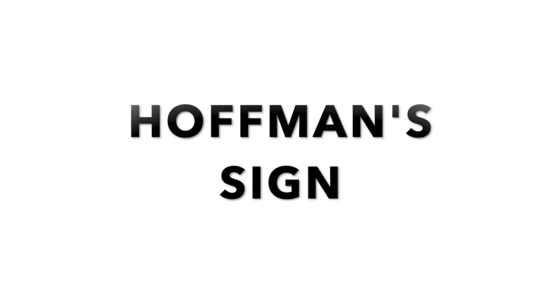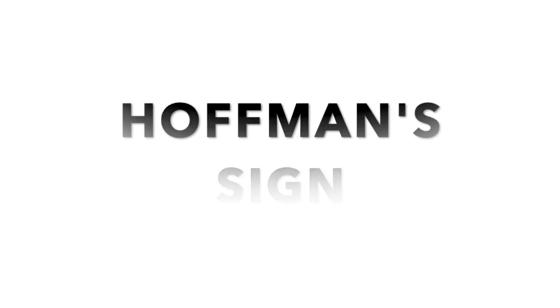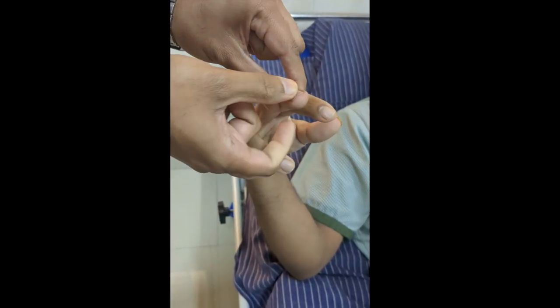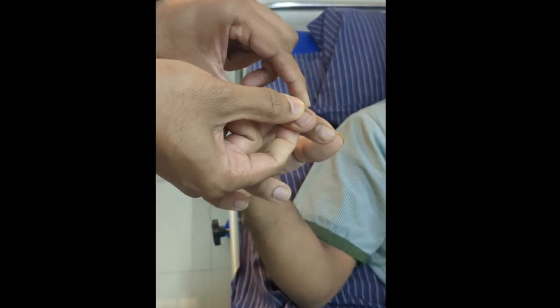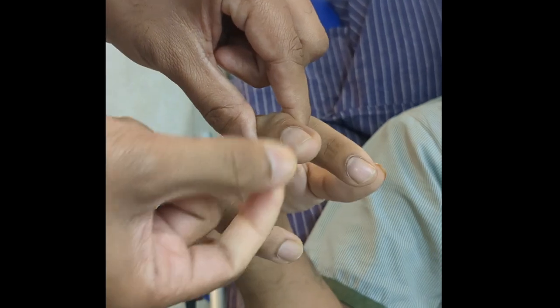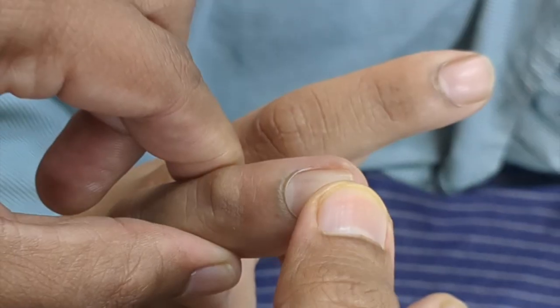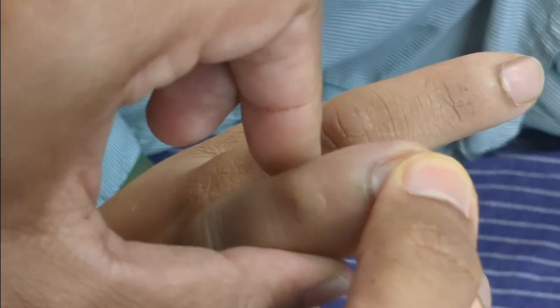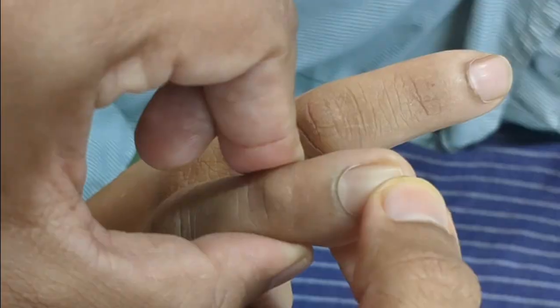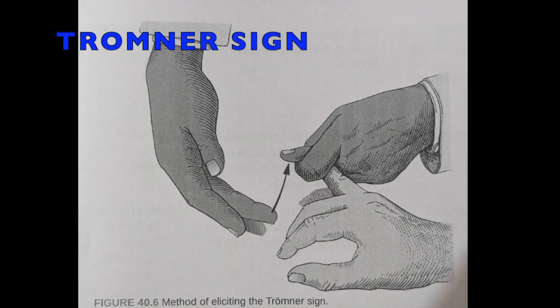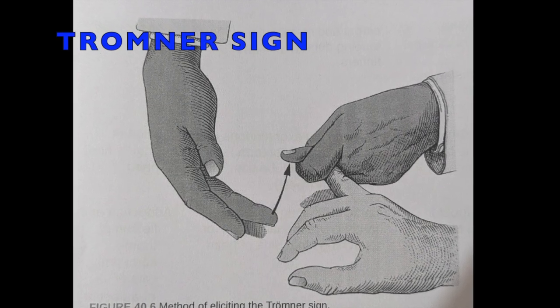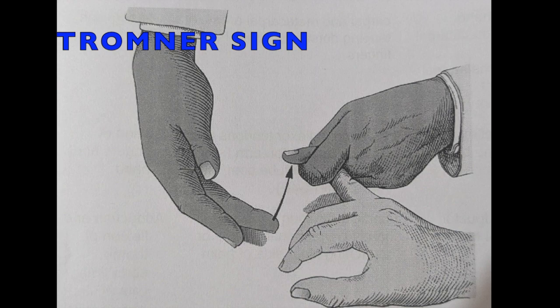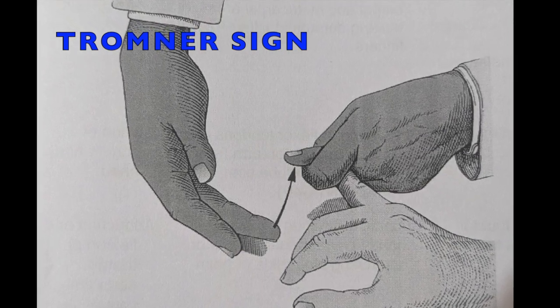The third upper limb equivalent of Babinski sign is Hoffmann sign. Flicking the distal phalanx of the middle finger causes flexion of the thumb, index finger, and other fingers as well. Make sure that you hold the middle finger in the way shown in the video and flick the distal phalanx downward briskly. In Tromner sign, you flick the distal phalanx of the ring finger upward and observe the flexion of the thumb, index finger, and other fingers.